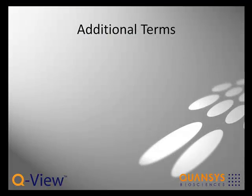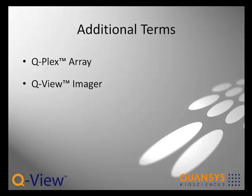A few other important terms you'll want to be familiar with related to the QView software are: QPlex Array, the brand name of the multiplexed ELISA kits manufactured by Qansas Biosciences; and QView Imager, the brand name of the imager produced by Qansas Biosciences. This is one of several imagers that is compatible with the QView software.